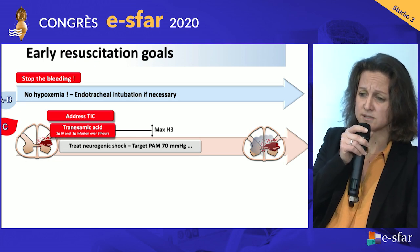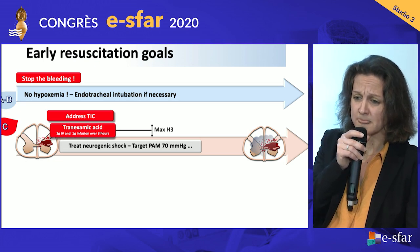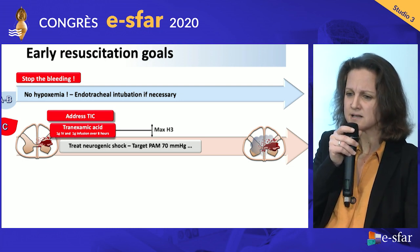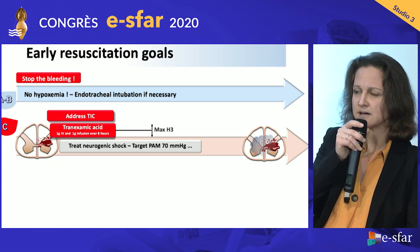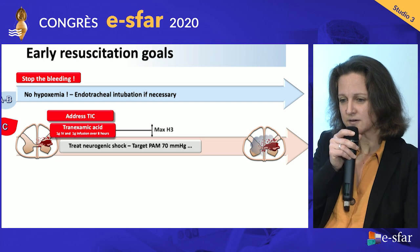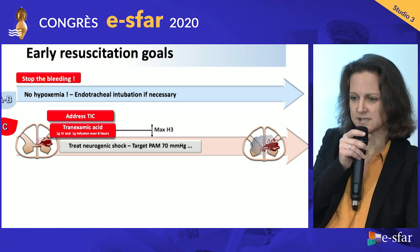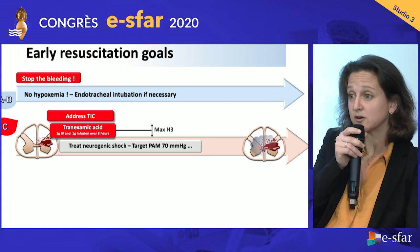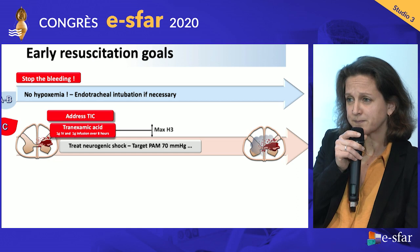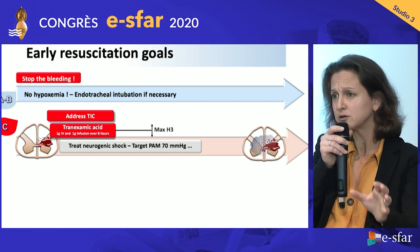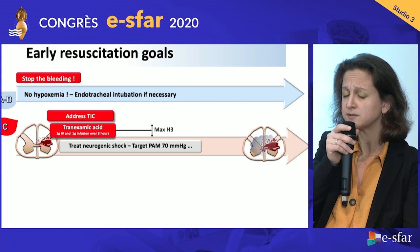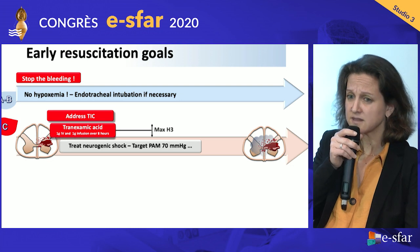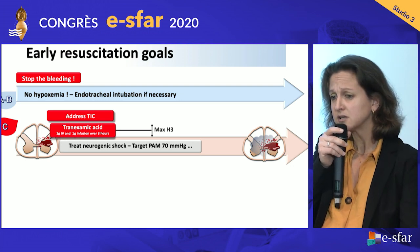Then you have to address the neurogenic shock, which is the imbalance between the parasympathetic nervous system and the damaged sympathetic system. The guidelines say you should target a mean arterial pressure of 70 millimeters of mercury. First of all, you have to give some fluid load because it's a distributive shock. You should also evaluate your volemia if you have hemorrhagic shock, and then you can give norepinephrine to reach the targets.